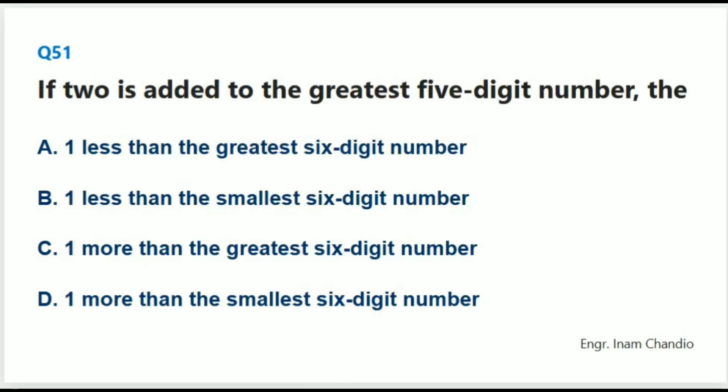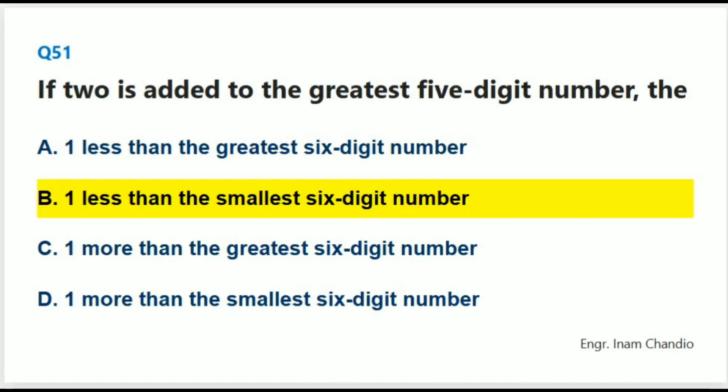If 2 is added to the greatest 5-digit number, the number will be: The correct answer is B. 1 less than the smallest 6-digit number.